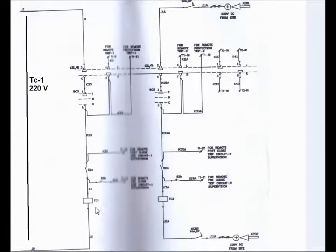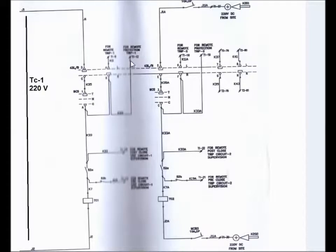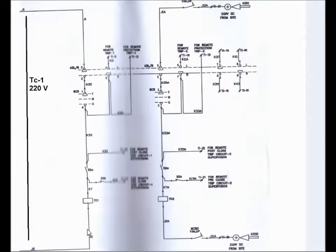As soon as the trip coil energizes, the breaker will be in OFF condition. For remote tripping, the local-remote selector switch must be in remote position. For protection tripping, if relay 86, the master trip relay, operates during a fault condition, the DC positive comes from the control and relay panel via the 86 master trip relay contact, through the auxiliary contact of the circuit breaker, to TC1.